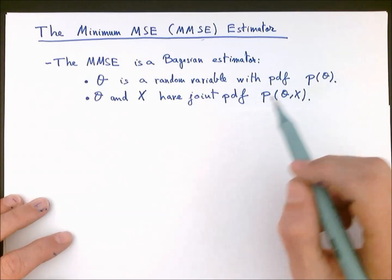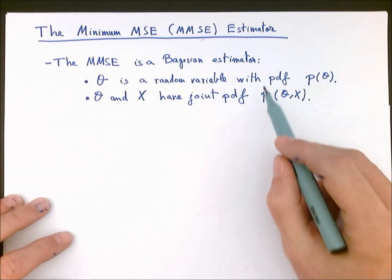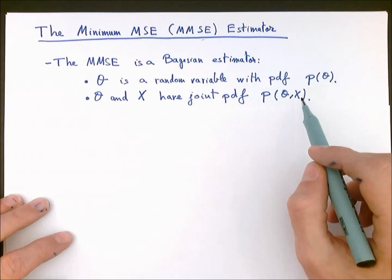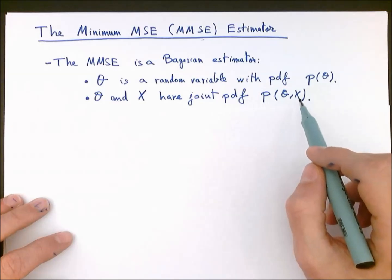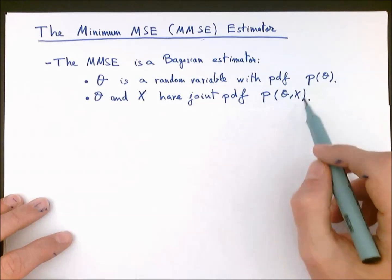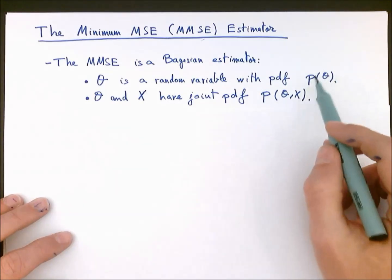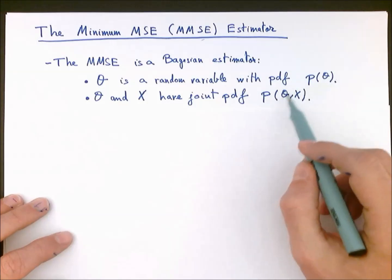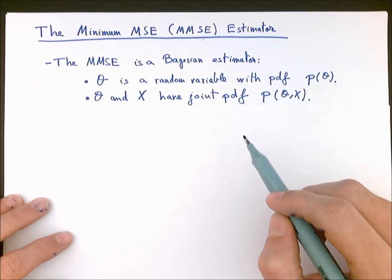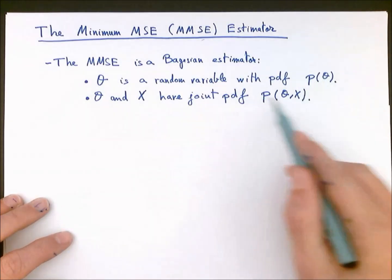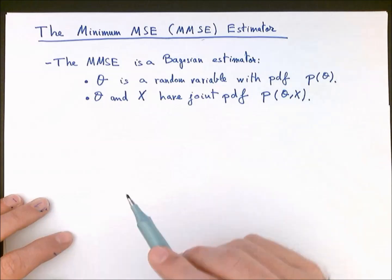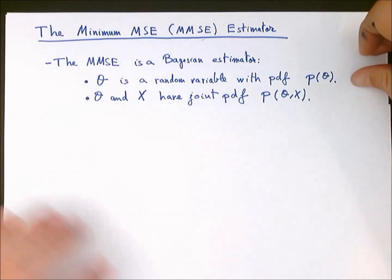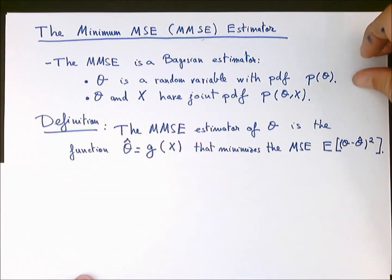We will see later on that for other Bayesian estimators, such a full characterization of the statistical dependency between the data and the unknown parameter may not be needed, and we may be able to work with only some moments of it — for instance, the mean and variance of the unknown variable and the covariance of the unknown variable with the data values. But if we assume we have this full characterization of our estimation problem available, then we can define the minimum mean squared error estimator.